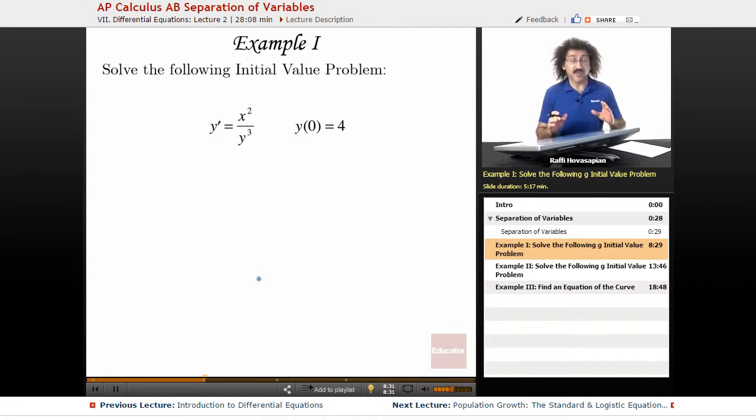Solve the following initial value problem. We remember an initial value problem is the differential equation and some initial value. The x value doesn't always have to be zero, it can be any number, but in this particular case it happens to be zero. And they tell me that the curve, when x is equal to zero, passes through the point four. So it passes through the point zero four.